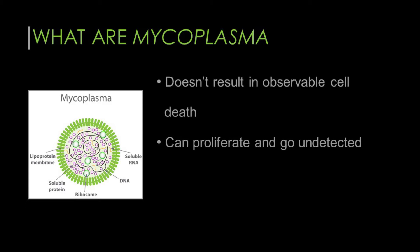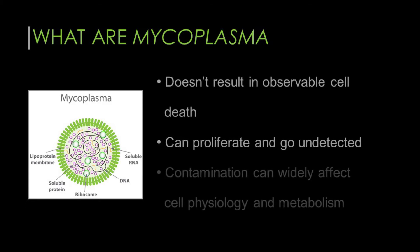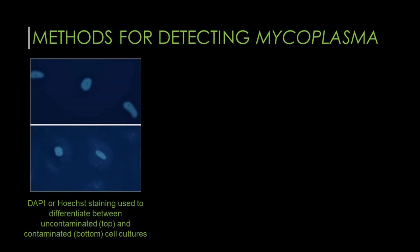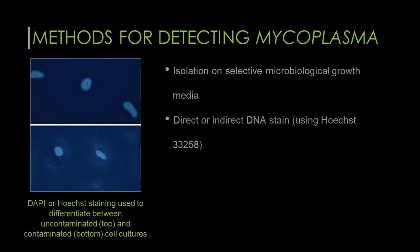Similar to other microbial contaminants, mycoplasma contamination can wildly affect cell physiology and metabolism. There are plenty of methods available to detect mycoplasma in cell culture, including isolation on selective microbial growth media, direct or indirect DNA stain, PCR, nested PCR, ELISA, and immunostaining. Each of these methods has their advantages and disadvantages. To learn more about these methods, check out our article on mycoplasma detection, linked in the description.